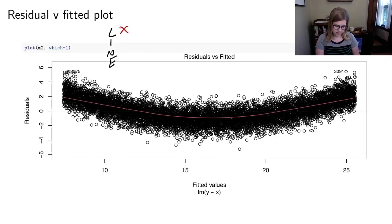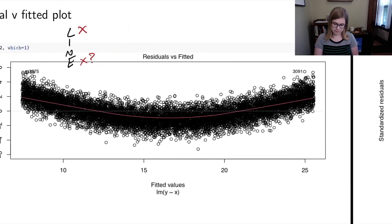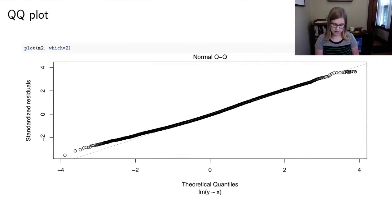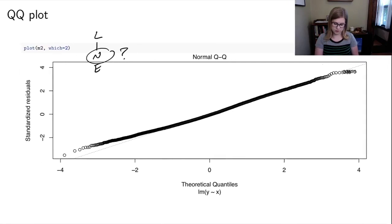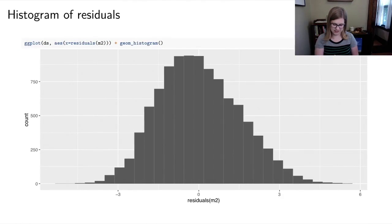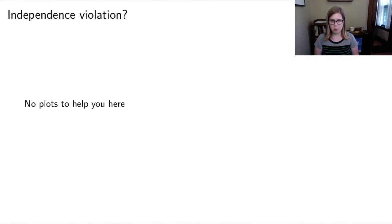The equality of variance looks somewhat questionable — the width of the residual band may be unequal, so the E condition might also be violated. The QQ plot starts to look a little bad too, with data pulling away from the dotted line at the lower end, suggesting possible normality issues. The histogram of residuals also looks possibly skewed, though it's still a little ambiguous.